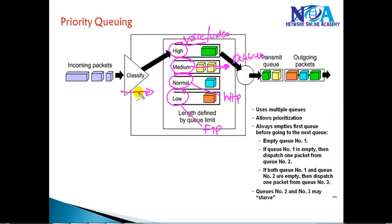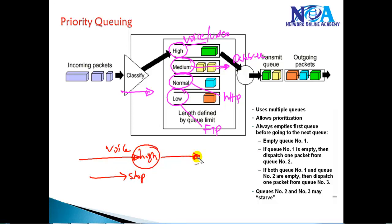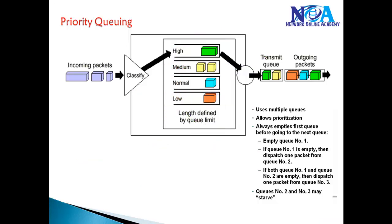Once we distinguish different types of traffic into four different queues, if a high-priority packet — say a voice packet — is coming in, it will stop all remaining queues and send that first. For example, 64 kbps of voice traffic will be sent first before all remaining queues. Once there is no high priority traffic, it sends medium priority, then normal priority, then low priority traffic. If any high priority packet arrives while forwarding low priority traffic, it will be sent first.